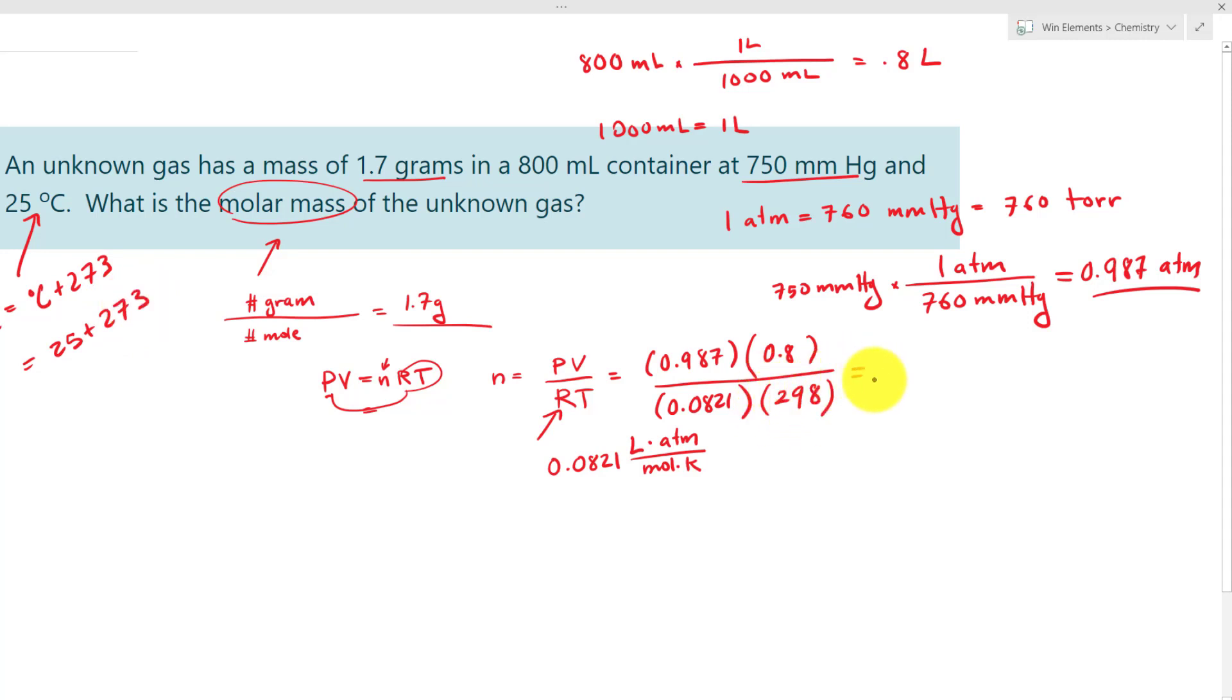Now we plug it in the calculator, multiply everything on top, and divide everything on the bottom. What we have here is 0.0322 mole. And that is the mole that goes here, 0.0322.